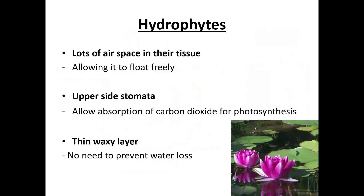Hydrophytes, for example water lilies, have lots of air spaces in their tissue so air can flow freely. They have upper-side stomata, which allow the absorption of carbon dioxide for photosynthesis — more carbon dioxide means the rate of photosynthesis will increase. They also have a thin waxy layer to prevent water loss.